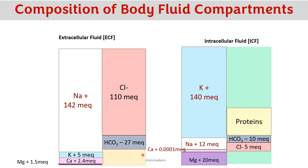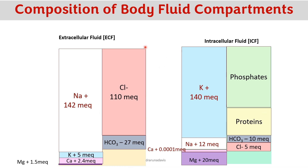A major difference is that intracellular fluid contains a large amount of negatively charged non-diffusable substances like proteins, and phosphates are the next major anion in ICF. ECF — whether interstitial fluid or plasma — does not contain as many proteins. The major anion in ECF is chloride, and in ICF it is phosphates.